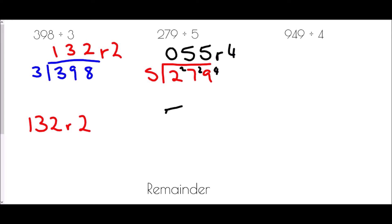And lastly, if we were doing 949 being divided by 4. Well in this case, how many 4s go into 9? It is 2 with 1 left over. How many 4s go into 14? It is 3 with 2 left over. How many 4s go into 29? Well it's 7 with 1 left over, and so it's 237 remainder 1.